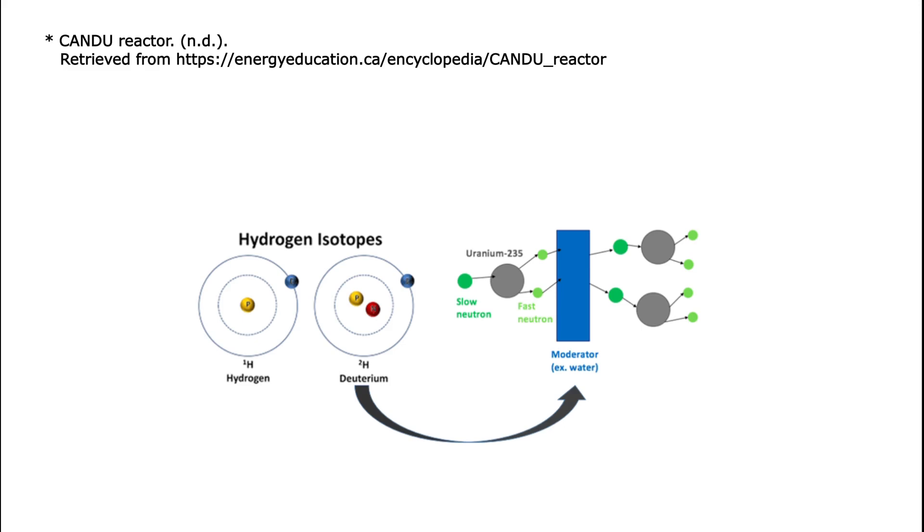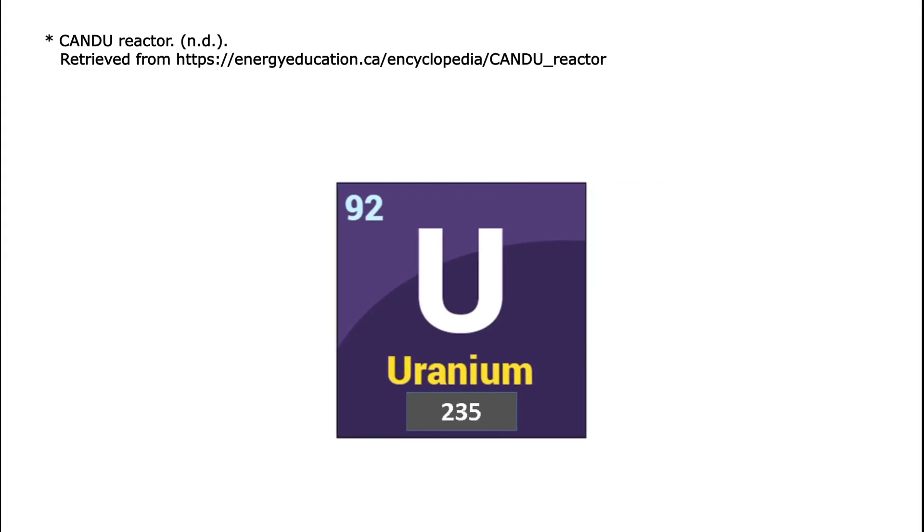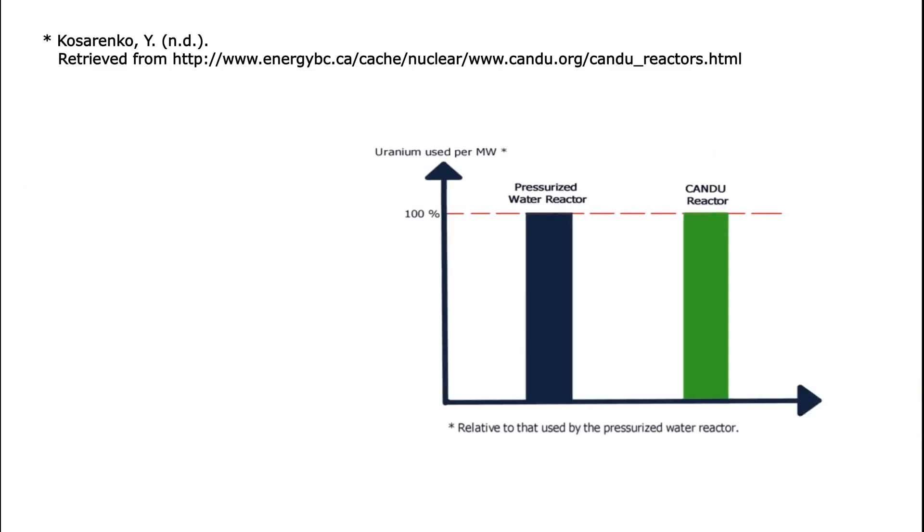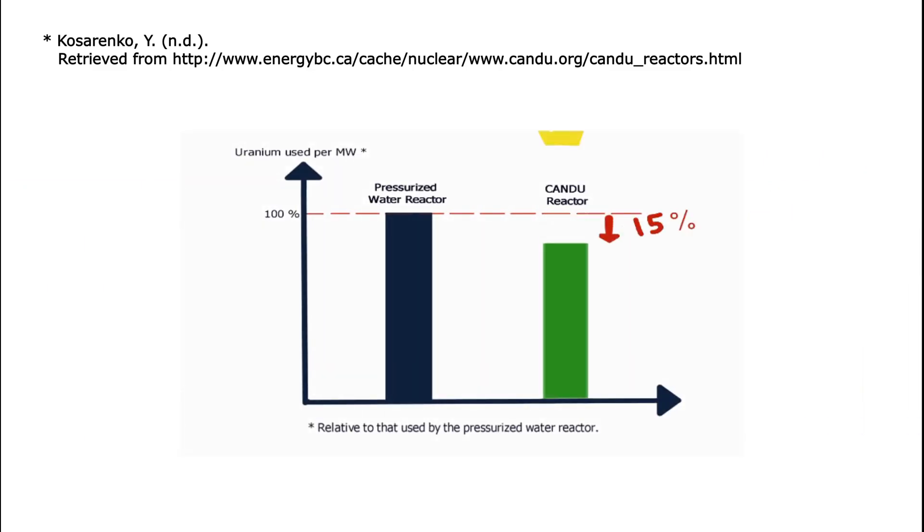CANDU reactors also differ from other reactors in their source of fuel, using natural uranium instead of enriched uranium. CANDU is the most efficient of all reactors in using uranium. It uses about 15% less uranium than a pressurized water reactor for each megawatt of electricity produced.